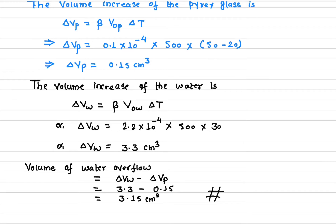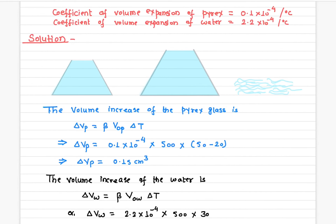The water expands 3.3 cubic centimeters and the Pyrex glass expands 0.15 cubic centimeters, so the overflow of water will be 3.3 minus 0.15, which equals 3.15 cubic centimeters. That means the water that has overflowed is 3.15 cubic centimeters.